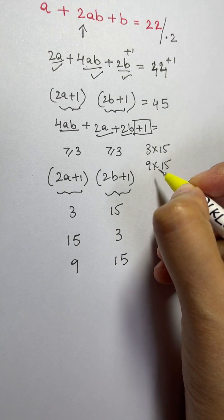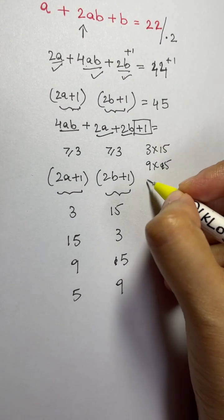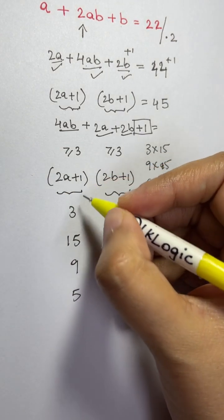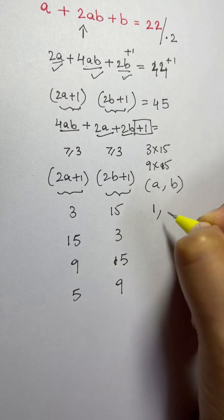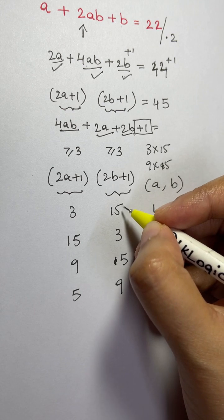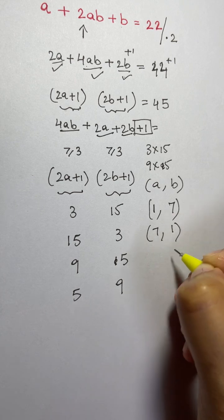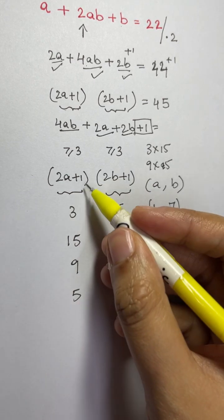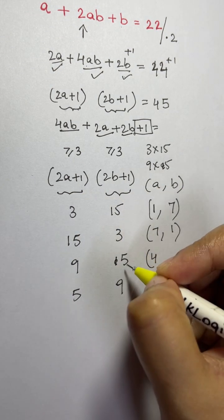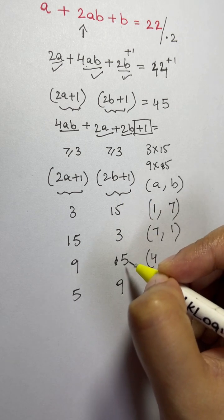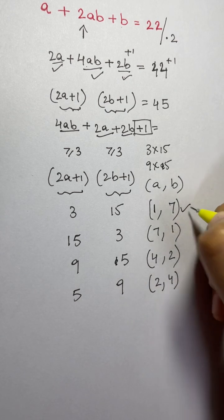Solving each case: If 2a + 1 = 3, then a = 1; if 2b + 1 = 15, then b = 7 → solution (1, 7). Vice versa gives (7, 1). If 2a + 1 = 9, then 2a = 8, so a = 4; if 2b + 1 = 5, then 2b = 4, so b = 2 → solution (4, 2). Vice versa gives (2, 4). So there are four solutions for (a, b).